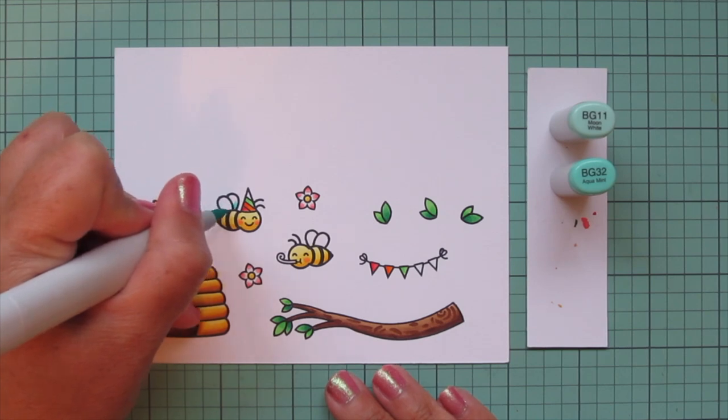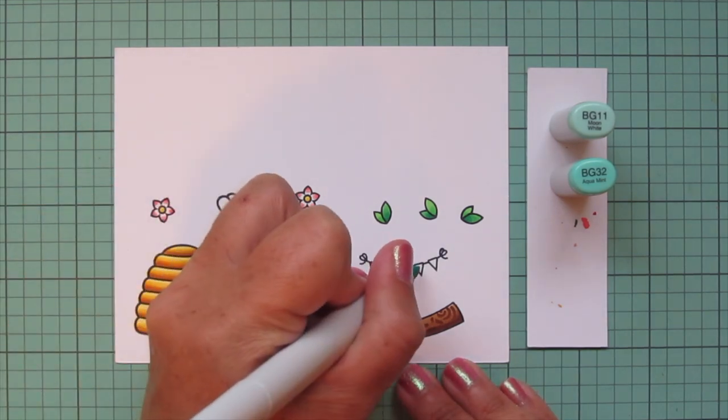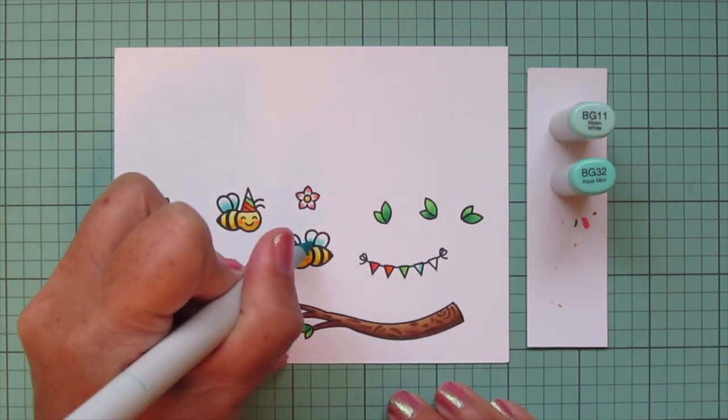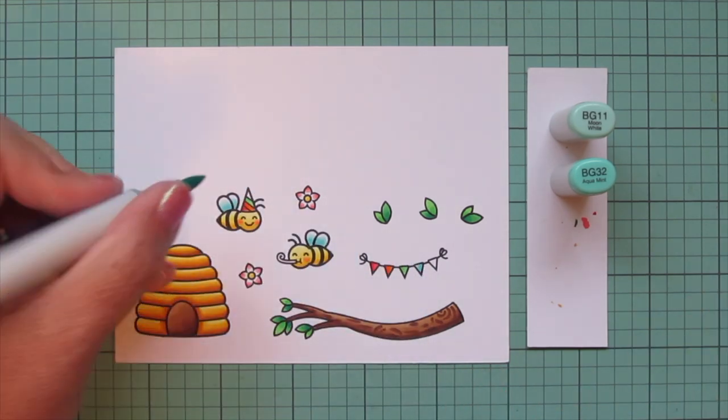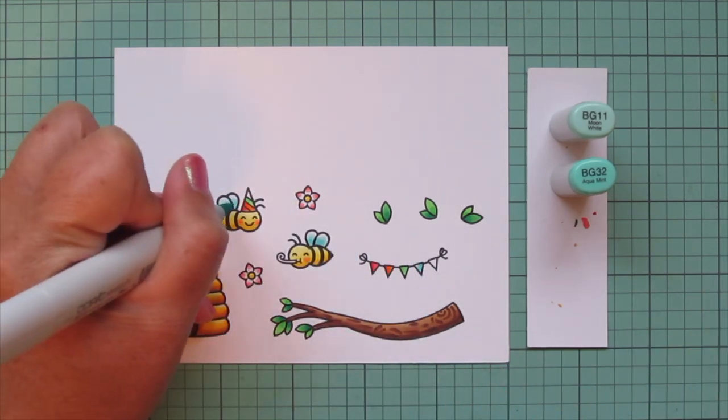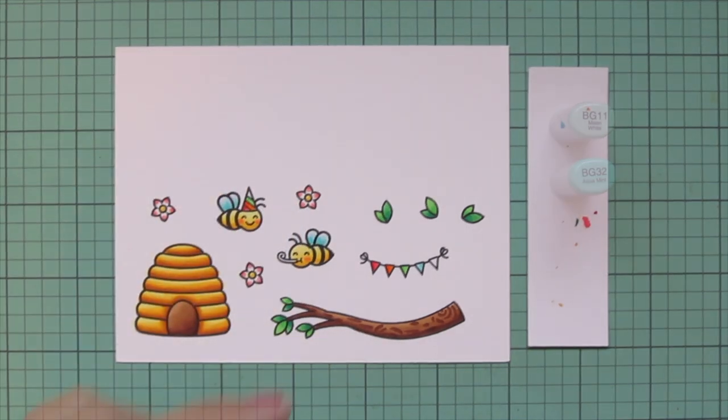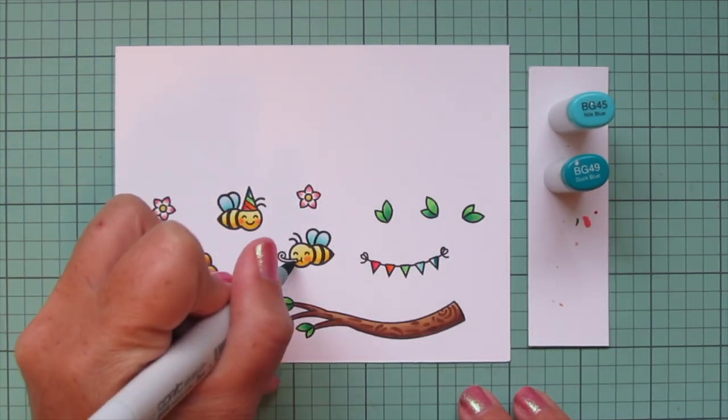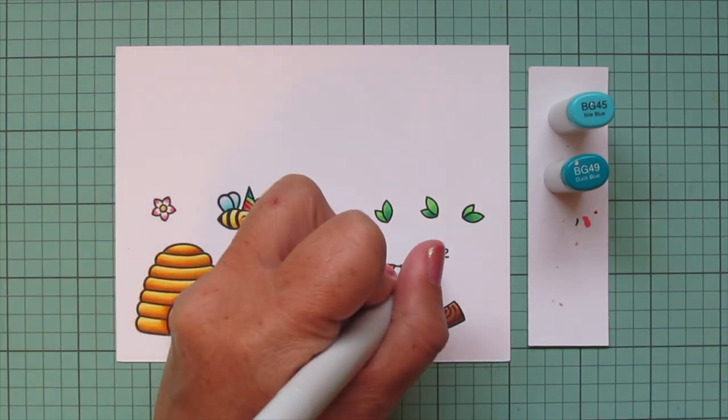I'm going to use BG11 and BG32 for the wings and also the next pennant banner on the row. This is where I did not let the bees' wings dry for long enough before I decided to add a little extra detail. I wanted to have some veining in there. It did not stand out at all, so I did have to go back and add that back in later on.